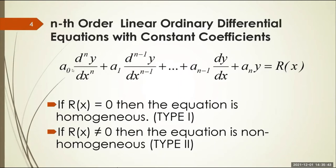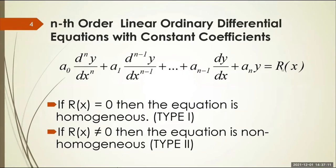The terms a sub zero, a sub one, and so on up to a sub n minus one and a sub n are the constant coefficients, and these are the differential operators — the nth order derivative of y with respect to x, decreasing in order down to just y. If r(x) equals zero, the equation is homogeneous (type 1); if r(x) is not zero, it is non-homogeneous (type 2).